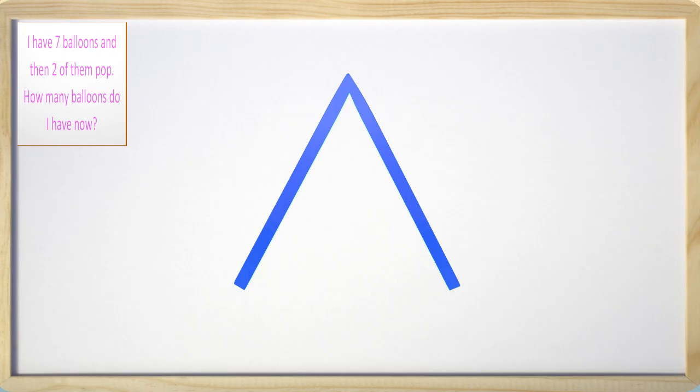The really cool part about subtraction problems with math mountains is that usually we know the total. In this problem, the total we started with is seven. The seven is at the top because it is the total we started with. I also know that of those seven balloons, two of them popped. The two goes down as one of the partners.